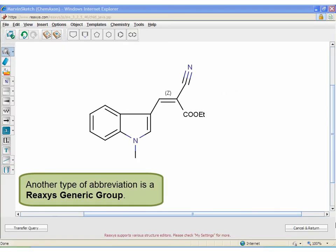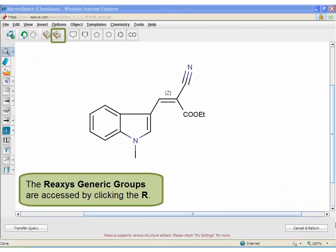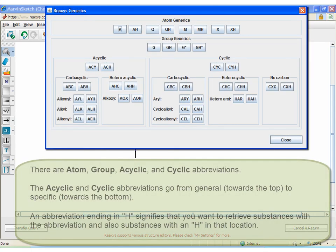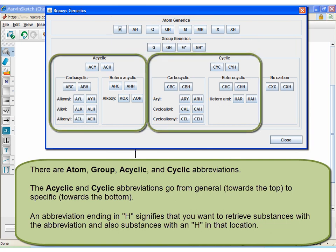Another type of abbreviation is a Reaxys Generic Group. The Reaxys Generic Groups are accessed by clicking the R. There are atom, group, acyclic, and cyclic abbreviations. The acyclic and cyclic abbreviations go from general towards the top to specific towards the bottom.